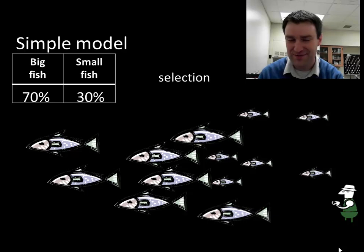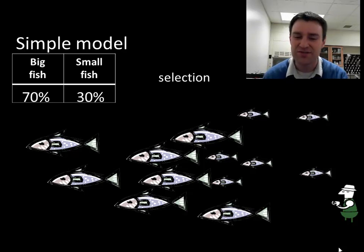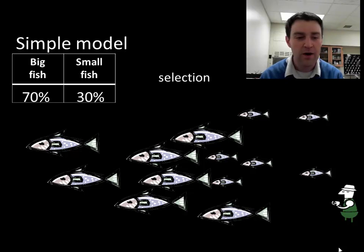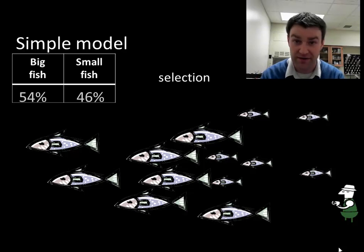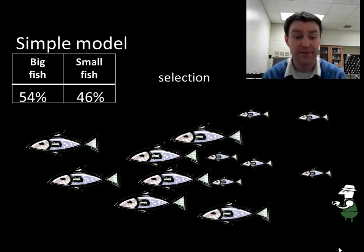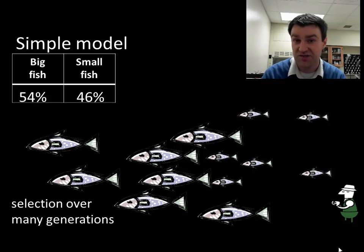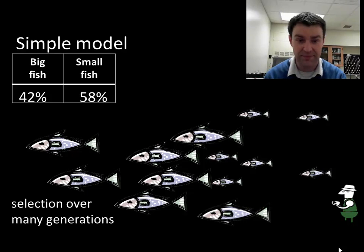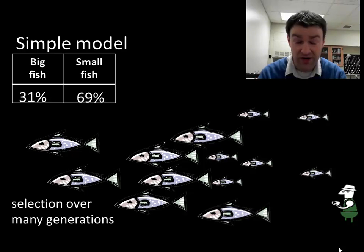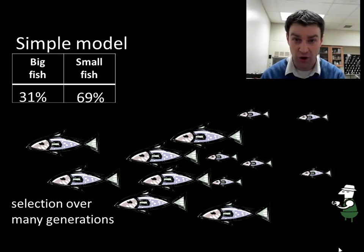In any case, if we count the new population and how many of each there were, we would see that the percentages are quite different — significantly fewer big fish and significantly more small fish than in the previous generation. That selection would have to continue over many generations to really generate a significant change in the population. When we say these percentages shift, we say that we are seeing evolution in progress. The population is changing over the generations.